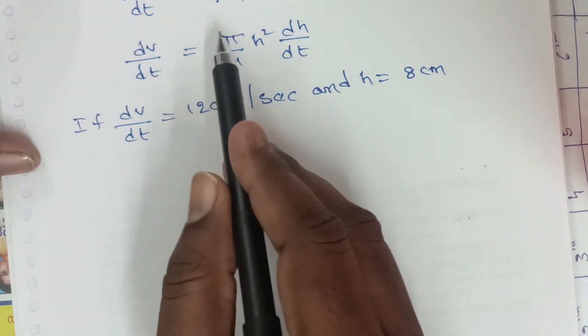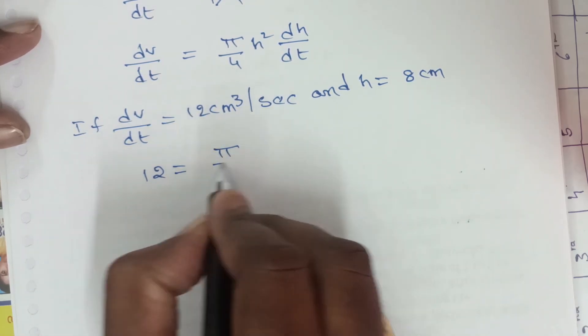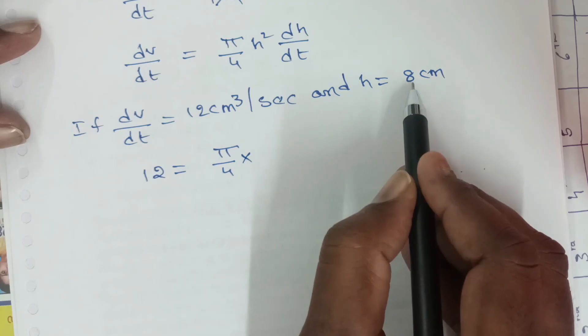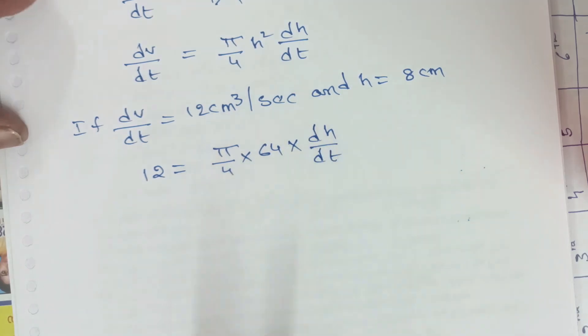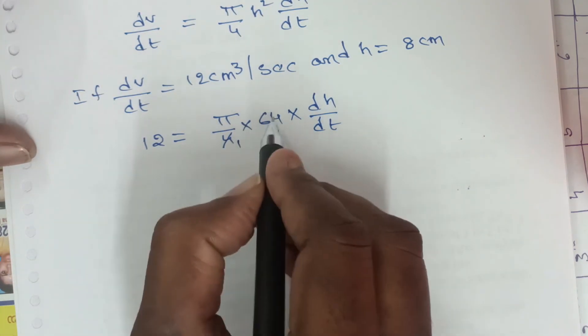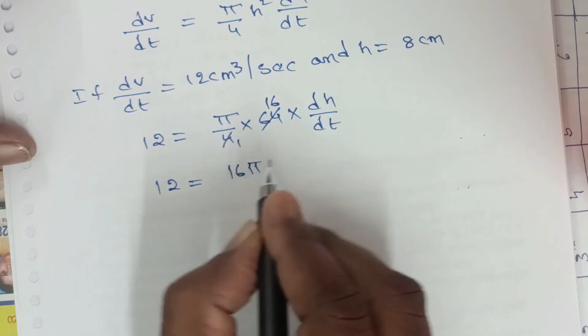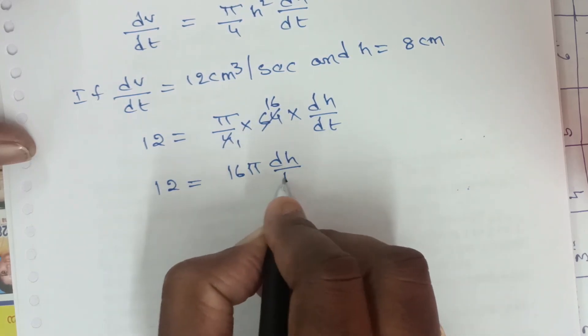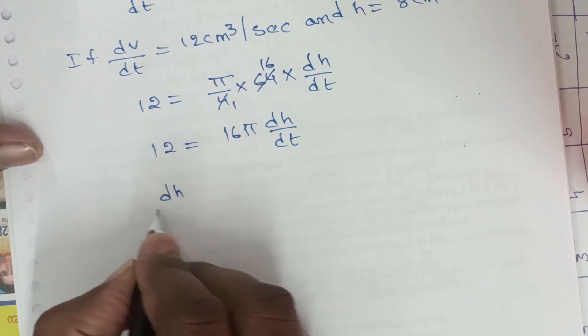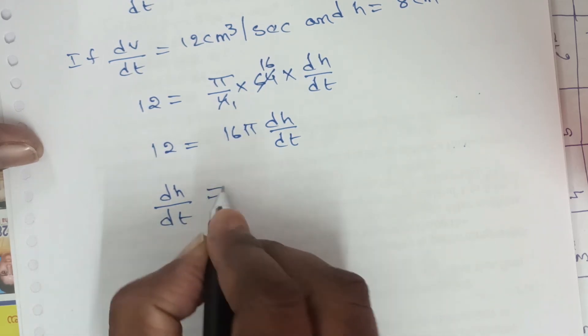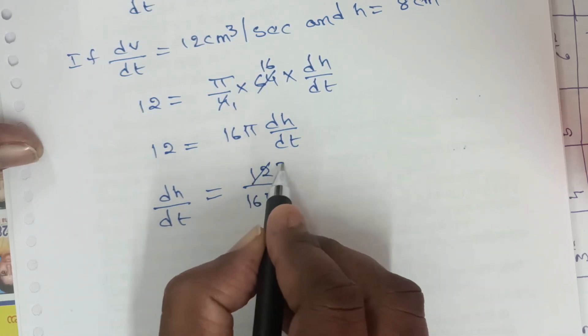Substitute the values in the above formula: dV/dt = 12 = (π/4)(8²)(dh/dt) = (π/4)(64)(dh/dt). So 12 = 16π(dh/dt). Therefore dh/dt = 12/(16π) = 3/(4π).